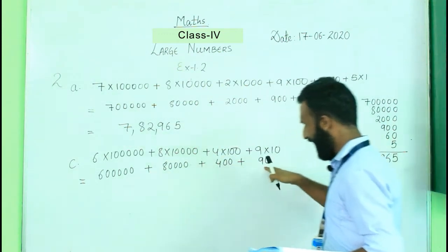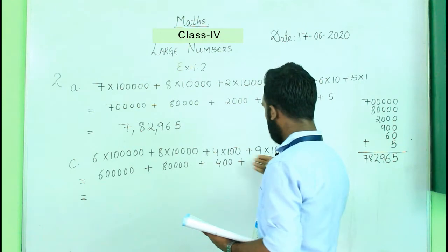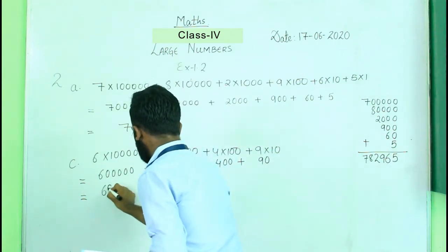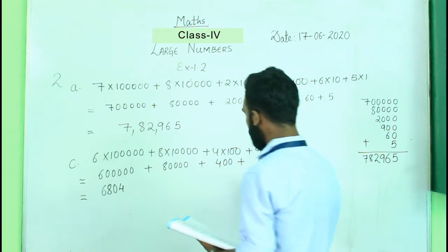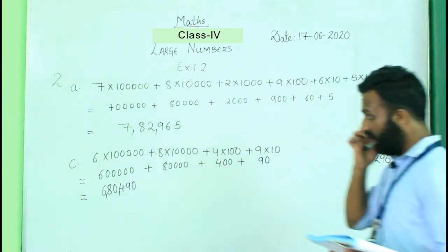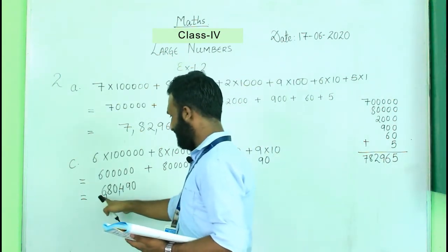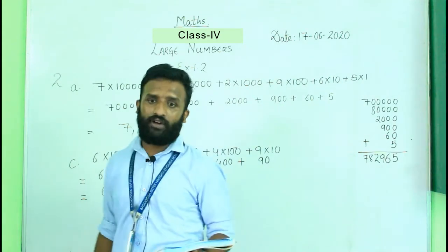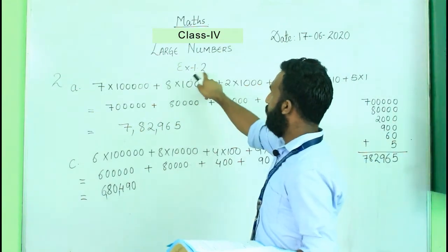Now we add these values together. Placing digits by their place values: 6 at the lakhs place, 8 at the ten thousands place, 4 at the hundreds place, and 9 at the tens place. Adding gives us the standard form: 6,80,490. I hope you all understand how to write the standard form and expanded form of numbers from exercise 1.2.